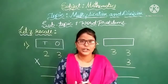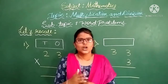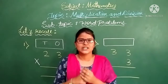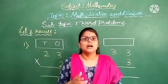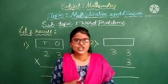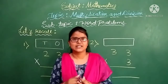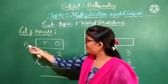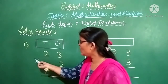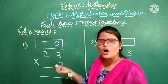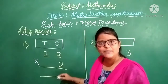Before going to our today's class, let us recall our previous class. We have discussed about the multiplication of a 2-digit number by a 1-digit number. See the first one: read the question 2 into 23, or we can read it as 2, 23s are dash.